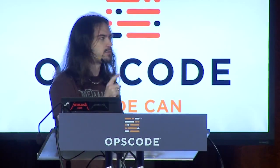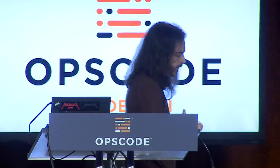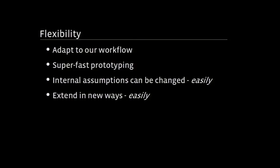The third and final thing we need is flexibility. I've talked about adapting to your workflow a couple of times already, but there are other things that come into flexibility. Super-fast prototyping is really critical. In our industry we have this common joke, especially on the operations side, that people come to us and say 'hey, I need this thing — when can you have it? By yesterday.'